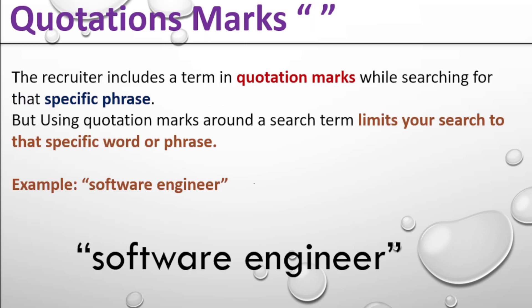Next is quotation marks. The recruiter includes a term in quotation marks while searching for a specific phrase. For example, if you want to find 'software engineer', use quotation marks so that you will find that exact phrase. Using quotation marks around a search term limits your search to that specific word or phrase. Since 'software engineer' is two words, using quotation marks ensures you find resumes where 'software engineer' appears together.